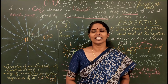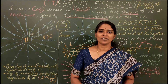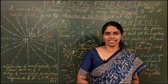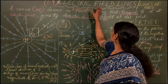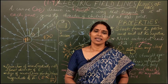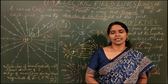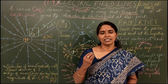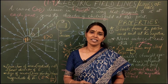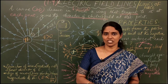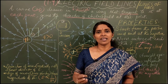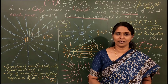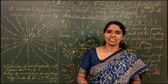Welcome to Yamuna's Physics. Today we are going to discuss topic 1.9 in the lesson electrostatics — electric field lines. We already know that there is an electric field around a charge, but that electric field can be drawn by means of simple lines or curves. Electric field lines are simply the pictorial representation of the electric field.